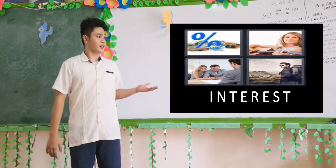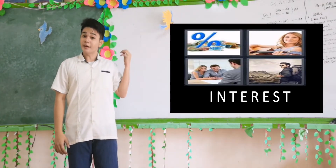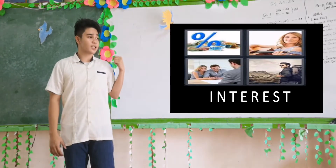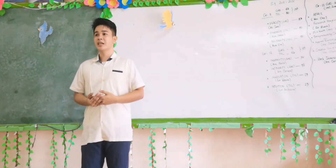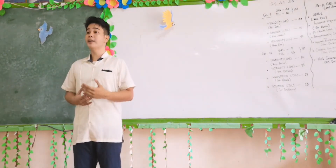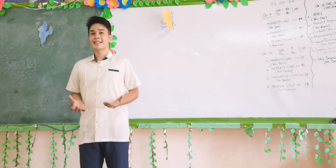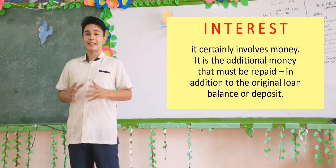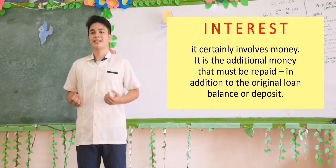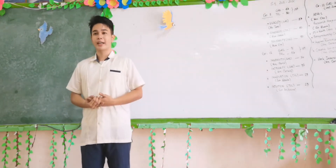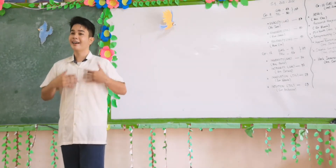As you can see from the pictures, they show interest when it comes to money, interest in passion, interest when it comes to a person or love, and interest when it comes to hobby. In English, interest is the urge or wanting to know and learn about something or someone. In mathematics, interest involves money — it is additional money that must be repaid in addition to the original loan or deposit.